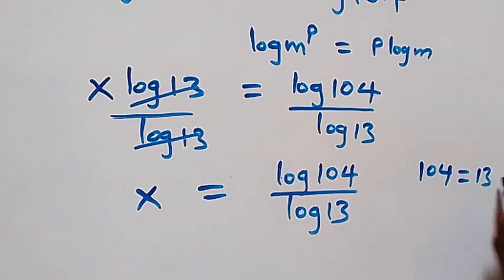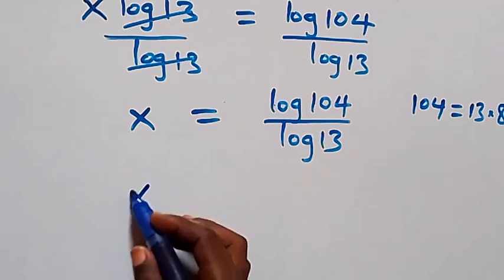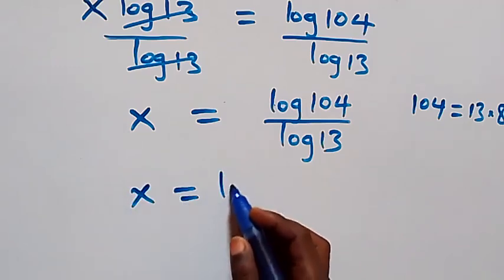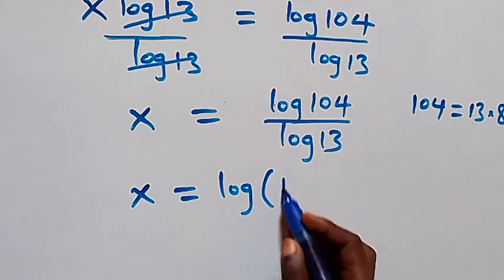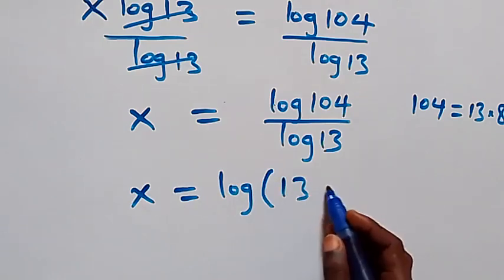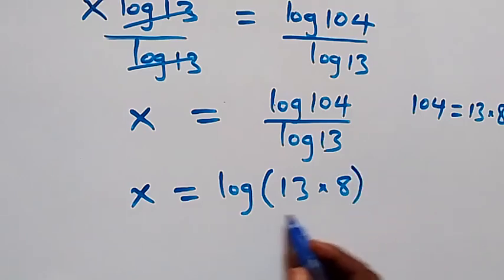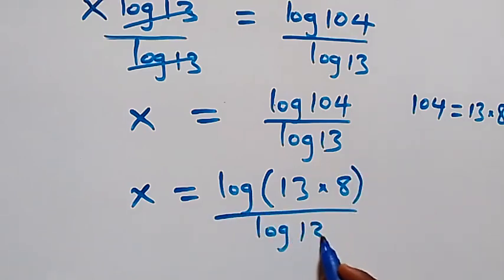From here, we can write 104 as 13 times 8. So this becomes x equals to log of (13 times 8), over log 13.